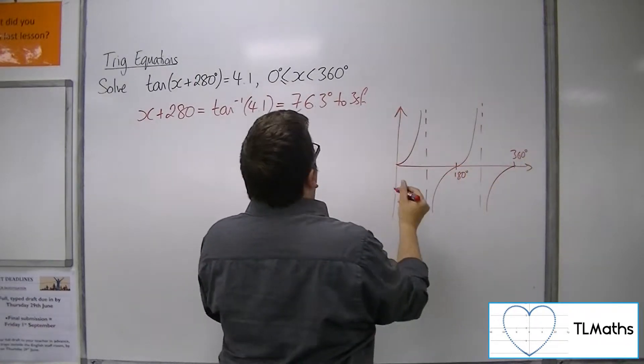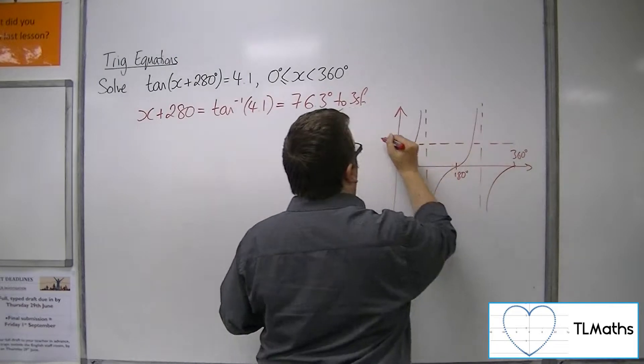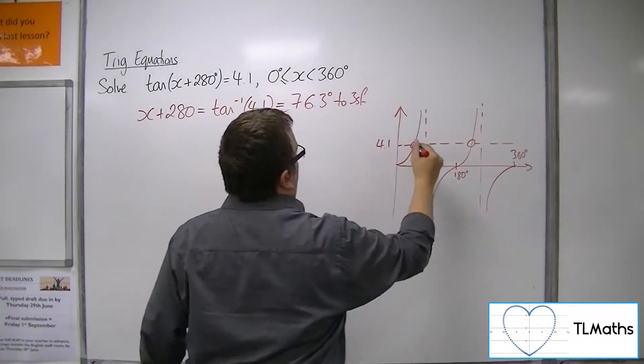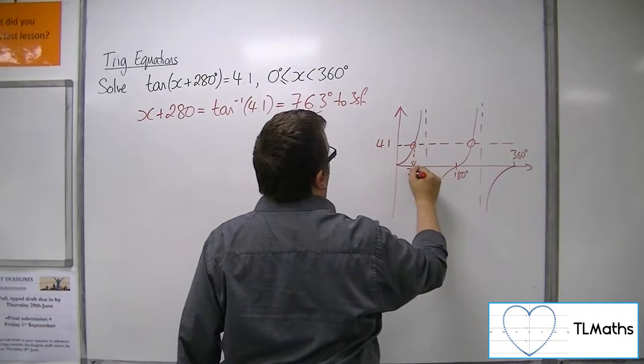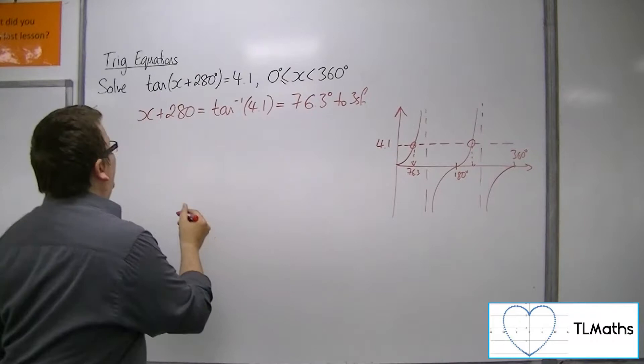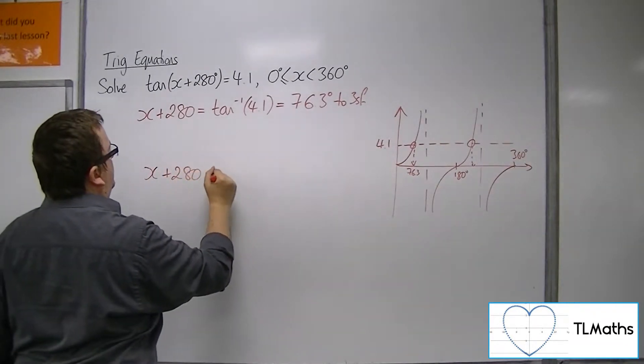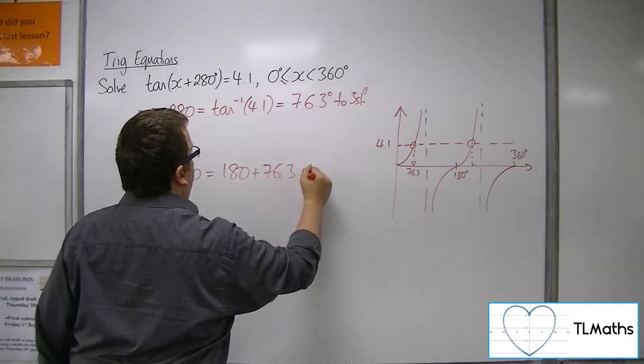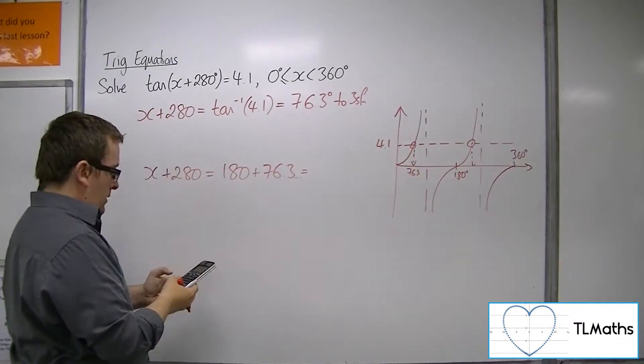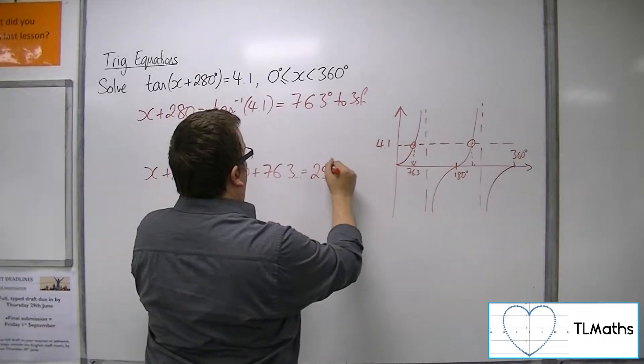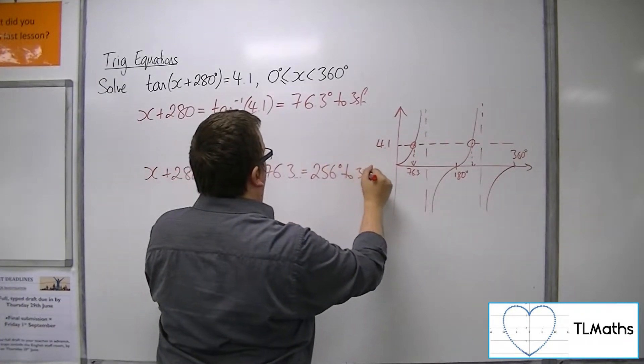OK, so 4.1, there's one solution, there's the second. So, there's your 76.3, and we can get the second solution by adding on 180. So, x plus 280 equals 180 plus the 76.3, which makes 256 degrees to 3 sig fig.